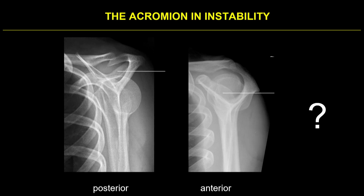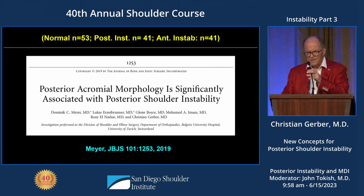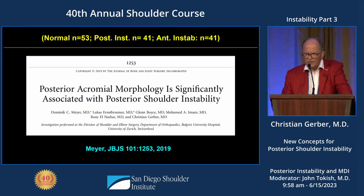In a normal or anterior instability case, the posterior inferior angle of the acromion is clearly within the glenoid — less than 20 millimeters above the center of the glenoid. In posterior instability, it is much, much higher. You can see that the head can be pushed out the back, which is also the reason that Scappinelli had the thumb test, showing that if you hold your thumb posteriorly, the patient cannot subluxate anymore. We systematically looked at posterior acromial morphology and found, in a JBJS article, that it is significantly associated with posterior shoulder instability.